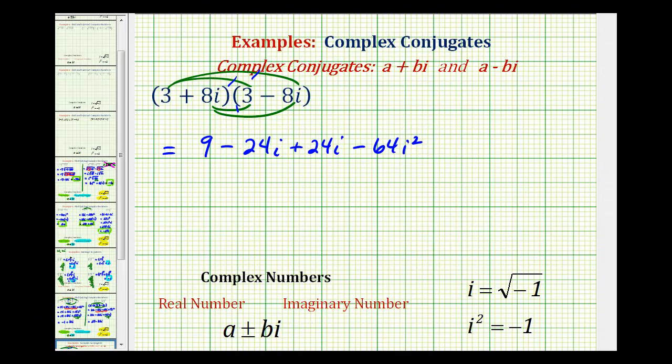And now we need to simplify. Notice how the two middle terms are opposites. So this sum would be zero. And then we know when simplifying complex numbers, we need to simplify i squared where i squared is equal to negative one. So now we need to substitute negative one for i squared.